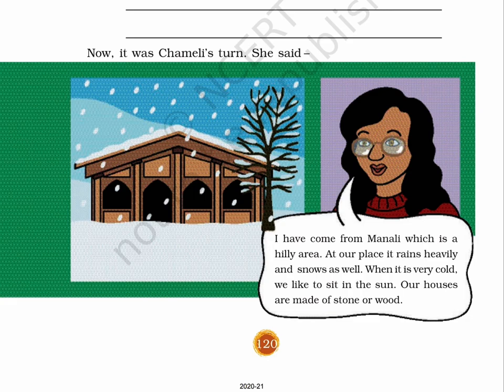Now it was Chameli's turn. She said — there is a picture given on page No. 120. In this picture, there is a girl on the right side and the picture of her beautiful house is given on the left side. There is snow around the house. The girl is telling something about her house, written as text in the talking bubble. She said: I have come from Manali, which is a hilly area. At our place, it rains heavily and snows as well. When it is very cold, we like to sit in the sun. Our houses are made of stone or wood.